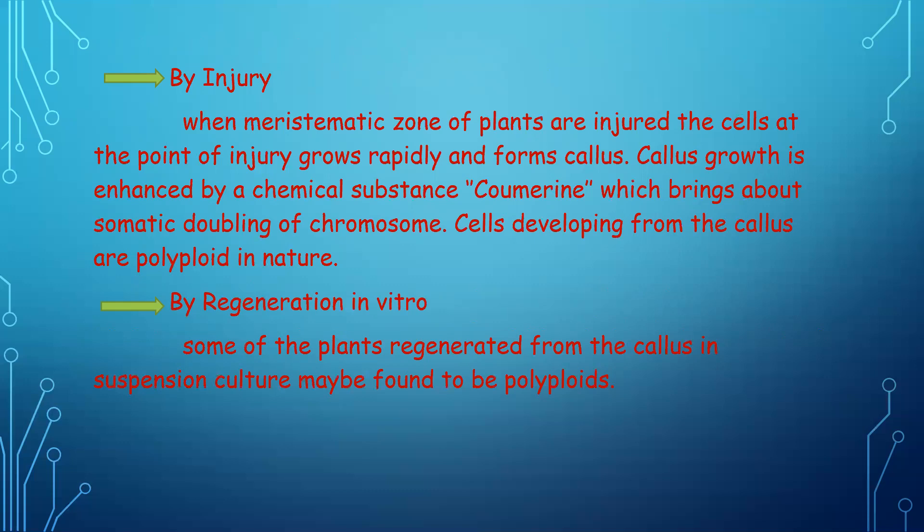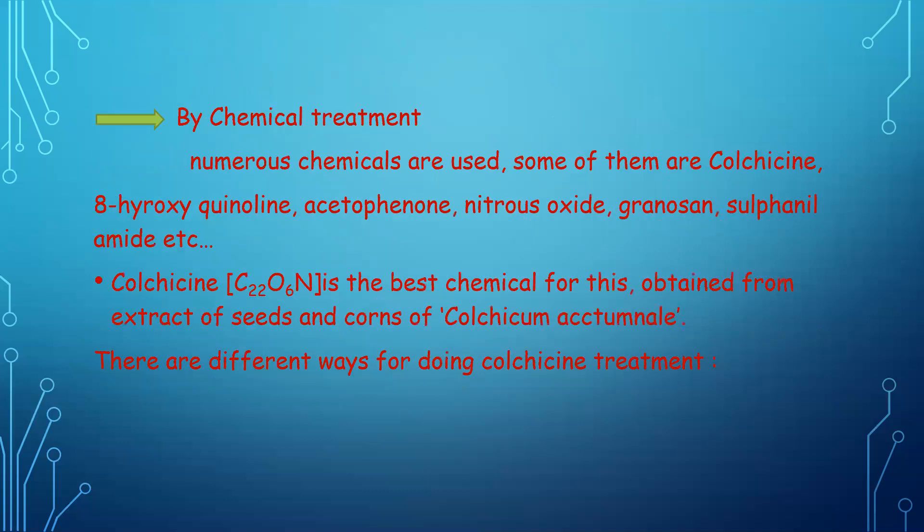Another method is regeneration in vitro — some plants regenerated from callus in suspension culture are found to be polyploid. An important technique is chemical treatment. Numerous chemicals are used for inducing polyploidy, such as colchicine, 8-hydroxyquinoline, acetoformin, nitrous oxide, granosan, sulfonamide, etc. Colchicine is the most famous and best chemical used for this purpose, obtained from the extract of seeds and corms of Colchicum.